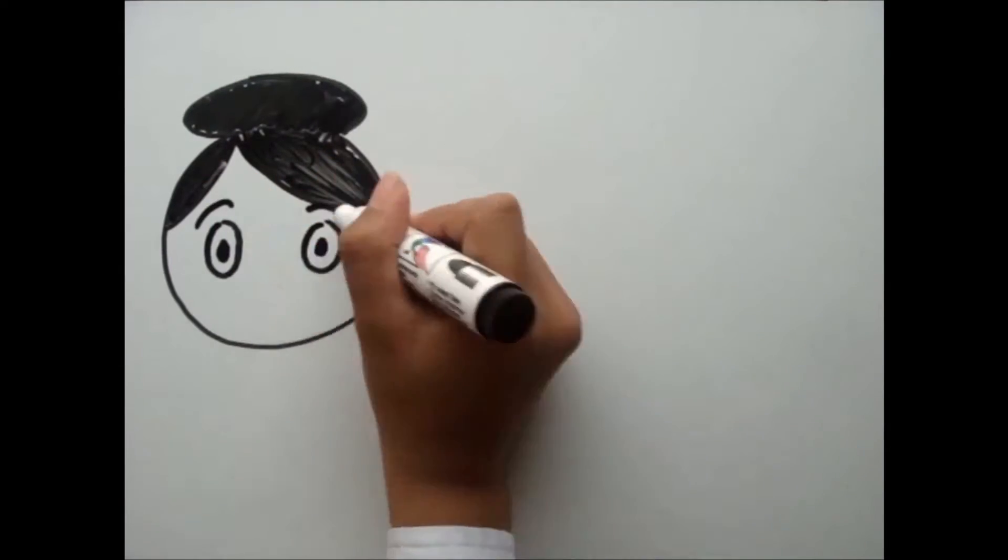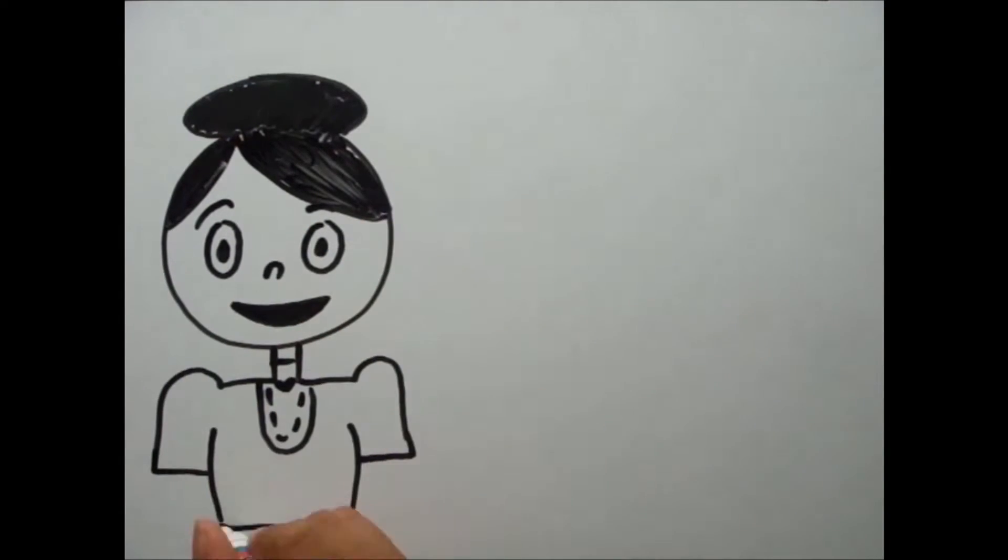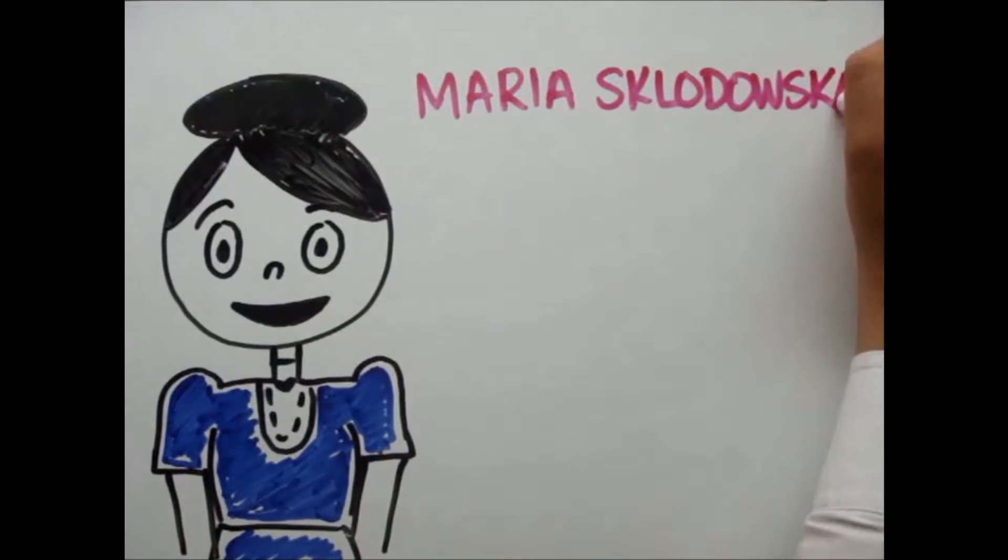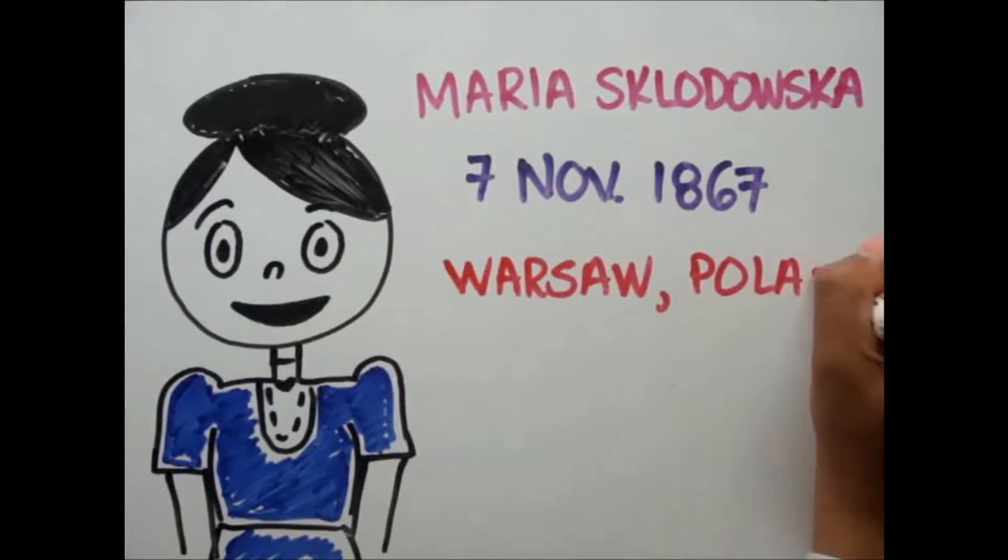Marie Curie was born Maria Skludowska on 7th of November 1867 in Warsaw, Poland, being the youngest child of Vladislav and Brunislaw Skludowska.